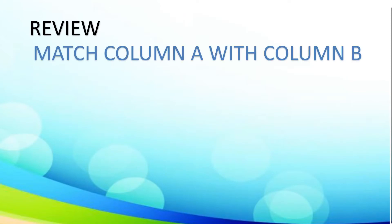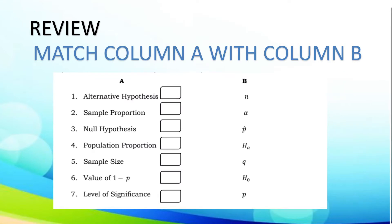Now, let's have a review. Match column A with column B. Using the given figure, let us identify which symbols correspond from the given column A to column B. The first one is alternative hypothesis; sample proportion; null hypothesis; population proportion; sample size; value of 1 minus P; and level of significance.